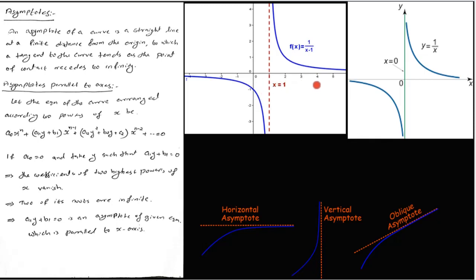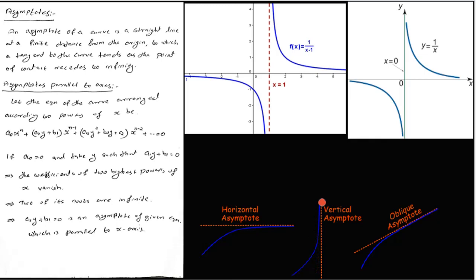Asymptotes can be of different types. A horizontal asymptote is a line parallel to the x-axis. A vertical asymptote is a line parallel to the y-axis. An oblique asymptote, also called an inclined asymptote, is neither horizontal nor vertical.